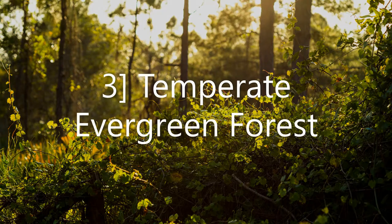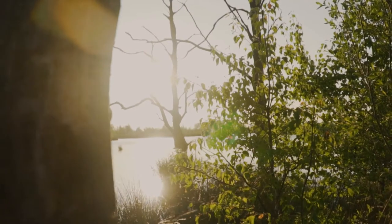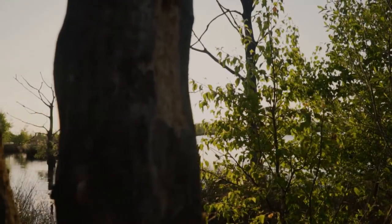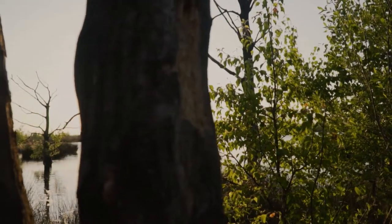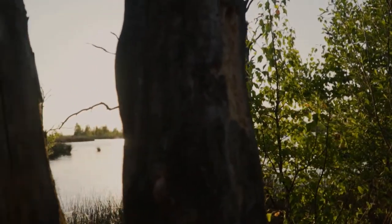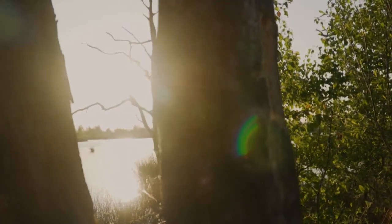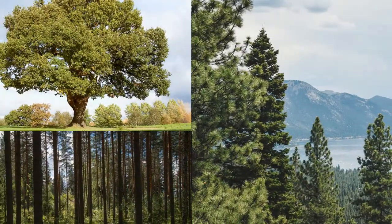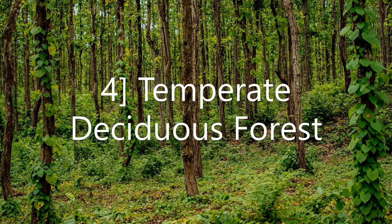The third forest type is the temperate evergreen forest. These are located in the mid-latitude coastal regions and are commonly found along the eastern margins of countries — in Southeast USA, South China, and Southeast Brazil. They comprise both hardwood and softwood trees like oak, pine, and eucalyptus.